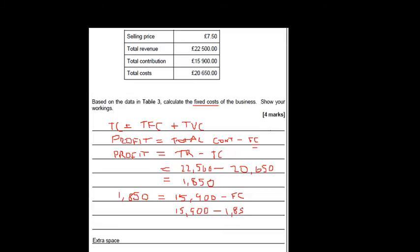Now I can rearrange the formula. I know that profit of one thousand eight hundred and fifty equals total contribution of fifteen thousand nine hundred minus fixed costs. Rearranging gives fixed costs of fourteen thousand and fifty pounds. Always use a calculator — don't try to be a hero in the exam, even if you do A-level maths. Make it really clear for the examiner by stating the fixed costs with the pound sign, and underline it so it stands out.